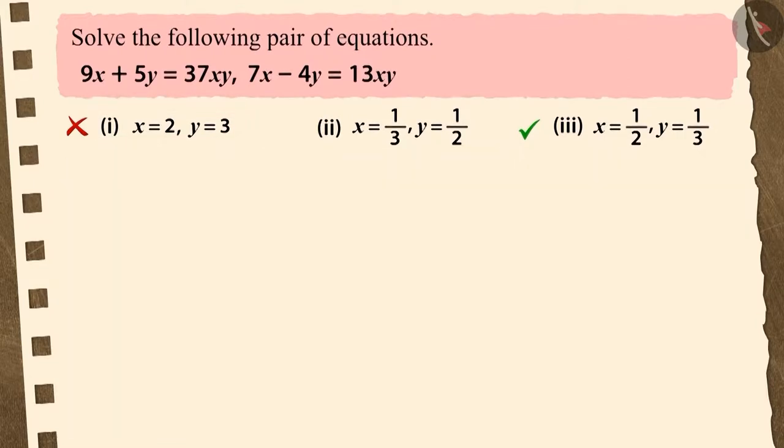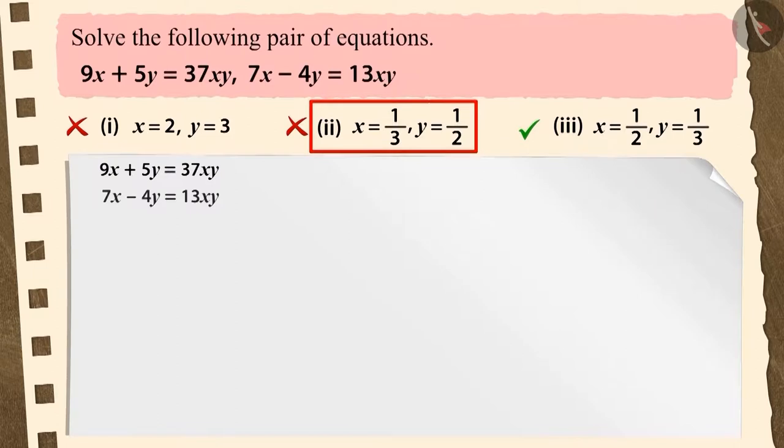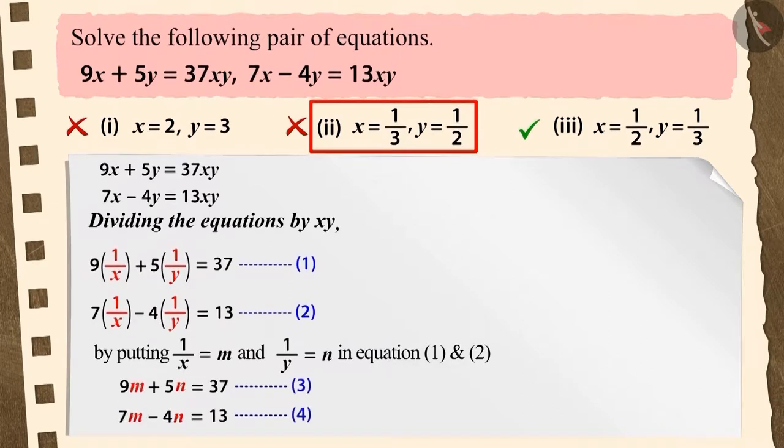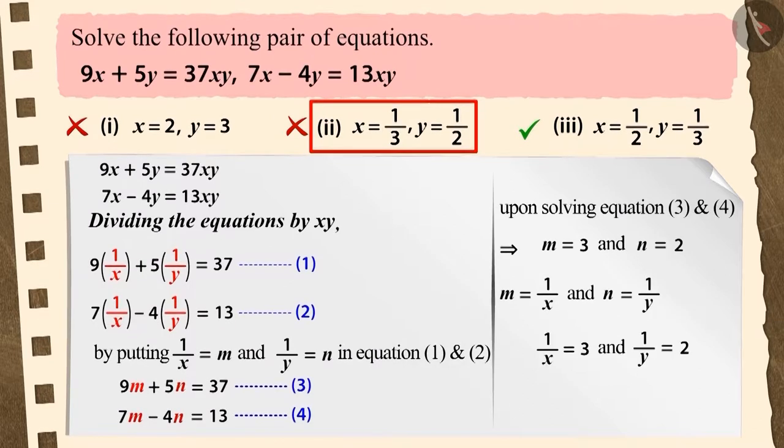If you selected option two, then it's a nice try but even this answer is wrong. This is because when you divide the equations by xy you often make a mistake, and according to that only you solve the rest of the question, which gives x is equal to one by three and y is equal to one by two, which is again wrong.